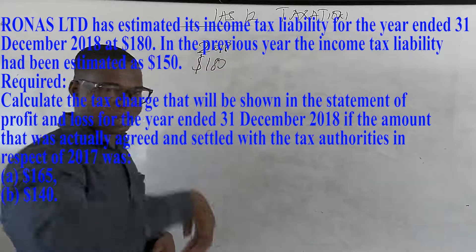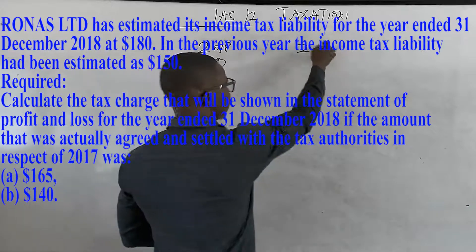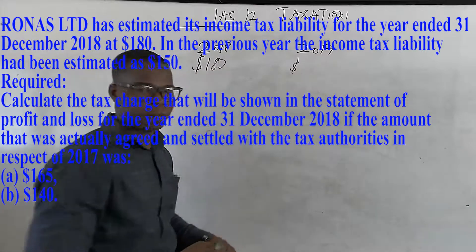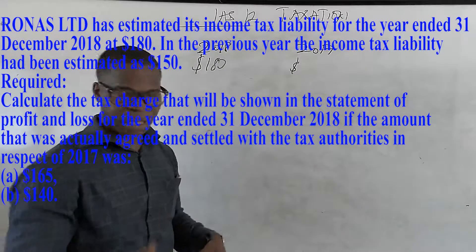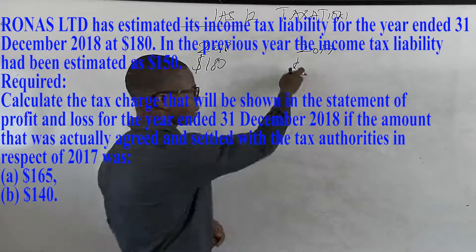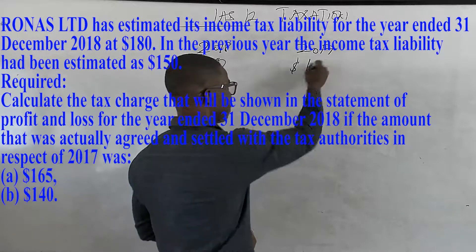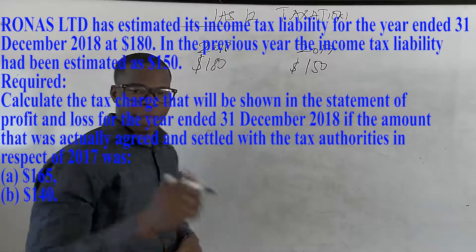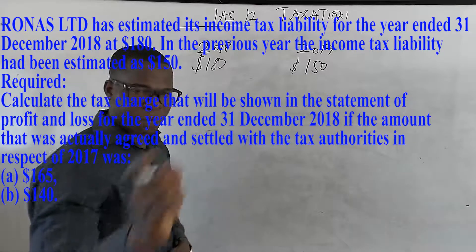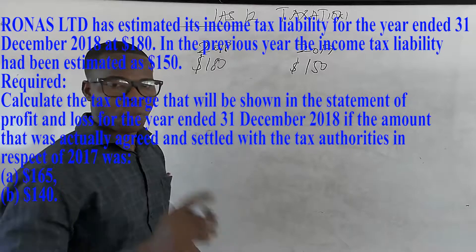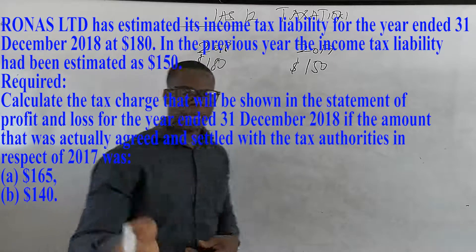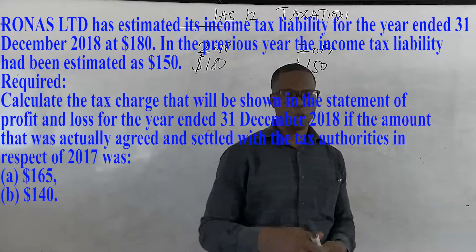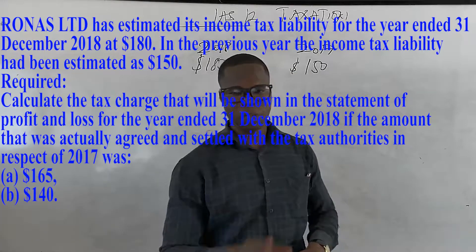Then in the previous year, which was 2017, they estimated — and this is what they actually accounted for in the books of 2017 — that their tax liability is going to be $150. The question asks us to calculate the tax charge shown in the statement of profit or loss for the year ended December 2018.